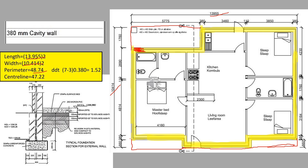We deduct the number of external corners minus the number of internal corners to get the net number of corners. Counting the external corners: one, two, three, four, five, six, seven. Then deducting the internal corners: one, two, three. So seven minus three gives four corners. The thickness of the wall is 380 mm, so 0.38. The total deduction is 4 times 0.38 equals 1.52. The center line is the external perimeter minus 1.52, giving us 47.22 meters.